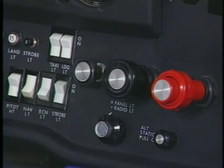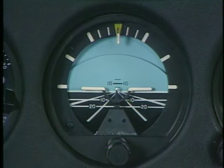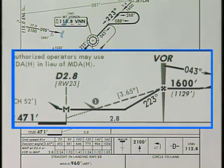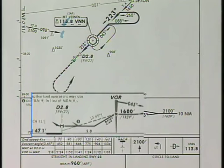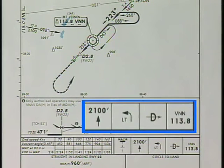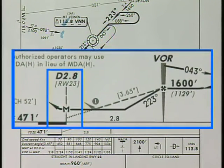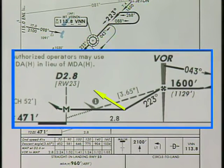For example, ATC may instruct you to execute a missed approach due to a disabled aircraft on the runway. Beginning a missed approach before you have arrived at the MAP requires special consideration. If you decide to execute the missed approach between the VOR and the 2.8 DME fix, and the charted procedure calls for a straight-ahead climb to 2,100 feet then a left turn direct to the Mount Vernon VOR followed by a hold, you must delay the turn until you reach the MAP. There is no restriction on climbing early, but an early turn may not provide the necessary obstacle clearance.